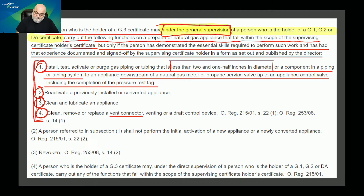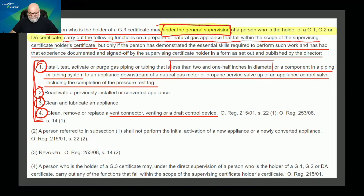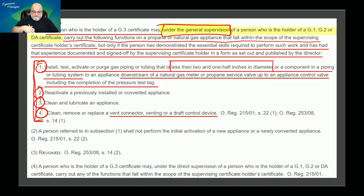The fourth task is to clean, remove, or replace a vent connector, venting, or draft control devices. You will learn what those terms mean in JST 1003, Introduction to Gas Appliances, specifically under unit 9. Notice it does not say 'install' — so you cannot install something that wasn't there originally. You can remove a defective draft control device and replace it, but you are not supposed to initially install one if it didn't exist in the first place.